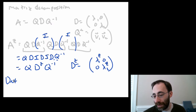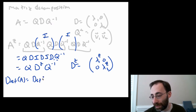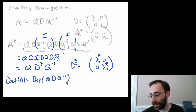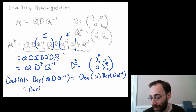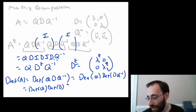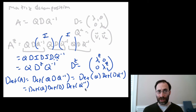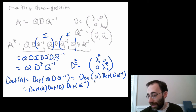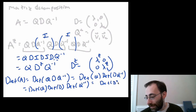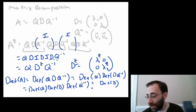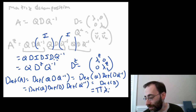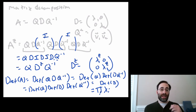The other way this helps you is with determinants. The determinant of A equals the determinant of QDQ-inverse, which equals the determinant of Q times the determinant of D times the determinant of Q-inverse — according to properties from a previous lecture. The determinant of Q-inverse is one over the determinant of Q, so those cancel and that equals the determinant of D. Since D is diagonal, the determinant of a diagonal matrix is the product of its diagonal elements, giving us the product of all the individual eigenvalues.